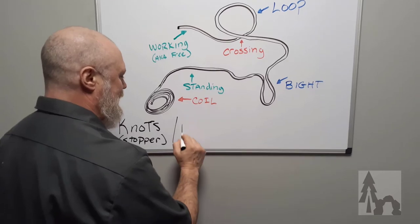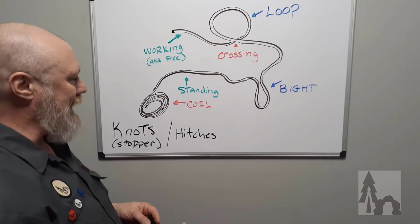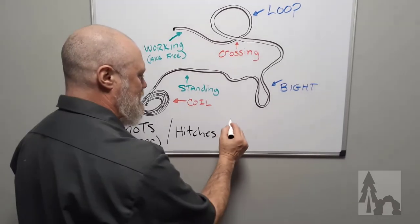We're also going to tie some hitches. Hitches is when you fasten the rope to something like a branch or a bar or another rope - that's going to be important.